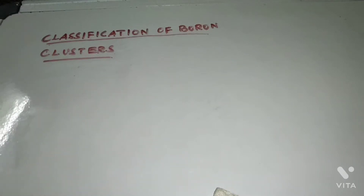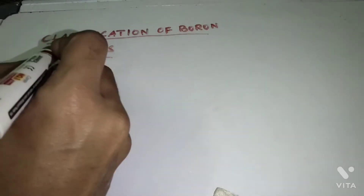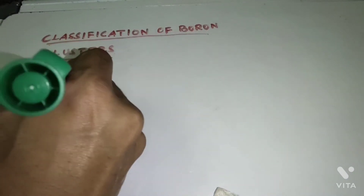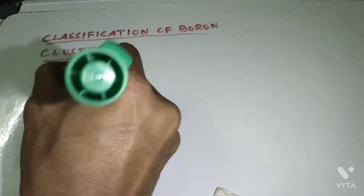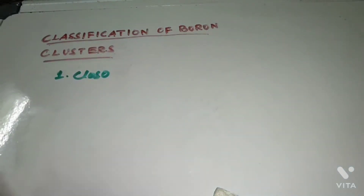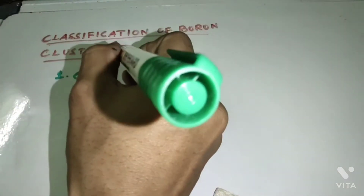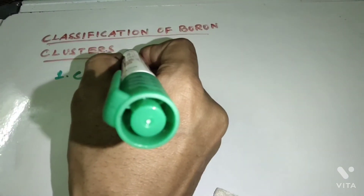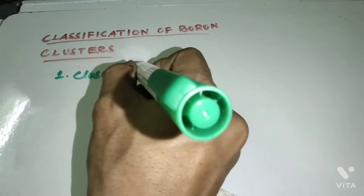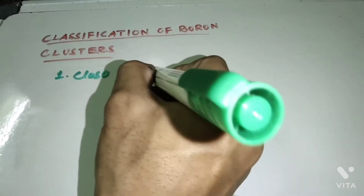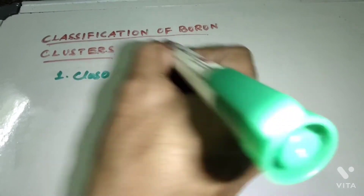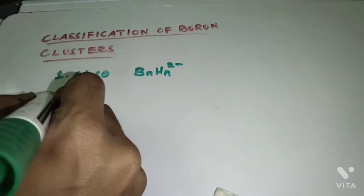There are five types of boron clusters. The first one is Closo borons. Closo borons have the general formula BnHn²⁻.